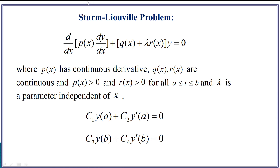This is the Sturm-Liouville problem. Basically, this is a self-adjoint equation where P(x) has a continuous derivative, since we need to differentiate it so that it should satisfy this equation. This equation should be well defined, so P(x) should be differentiable and continuous. Similarly, Q(x) and R(x) should be continuous, and lambda is the parameter — a constant — but we can choose its value, and this parameter will give different equations depending on different values of lambda.